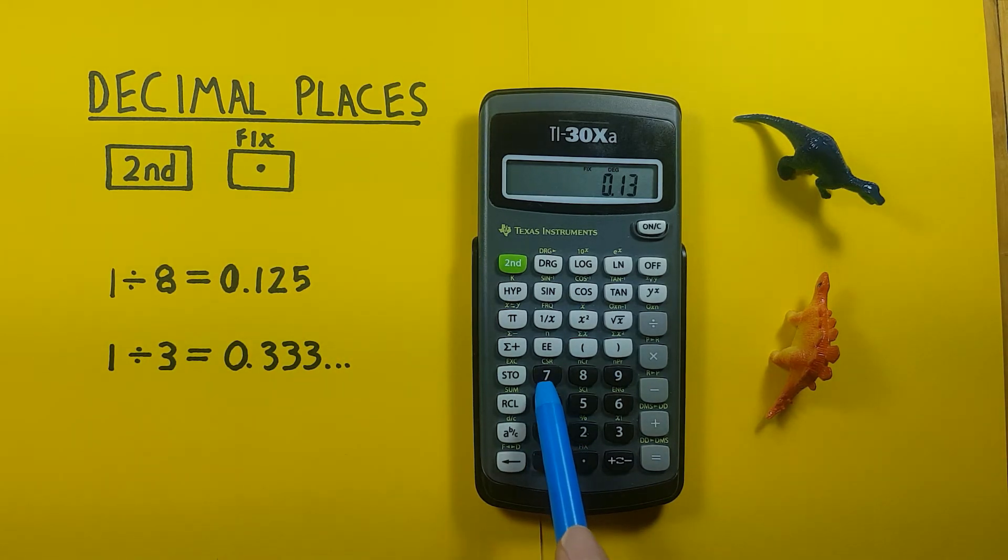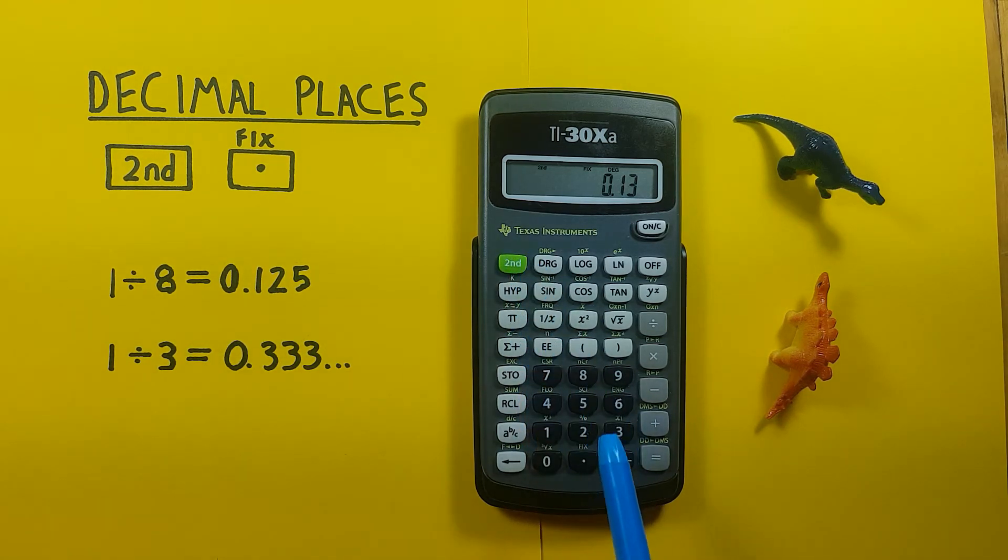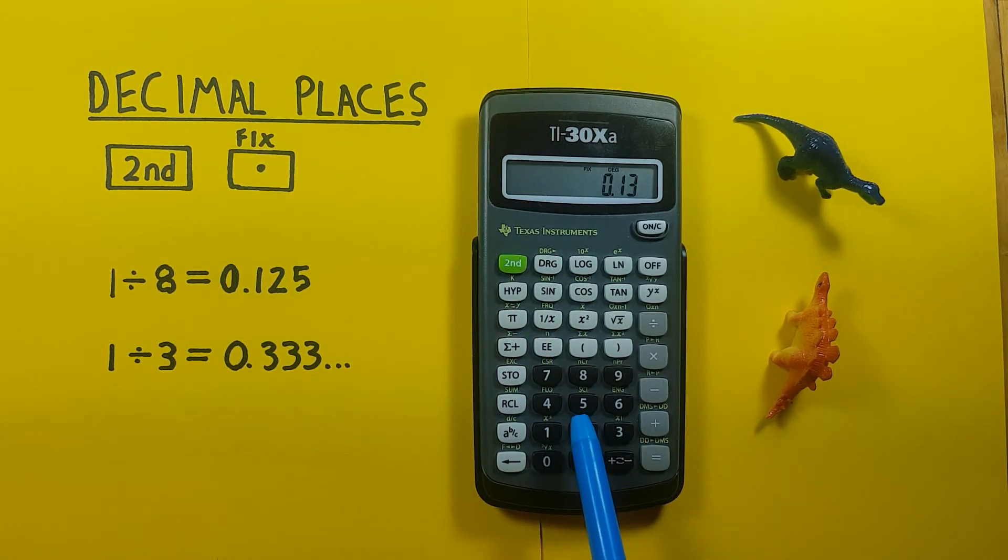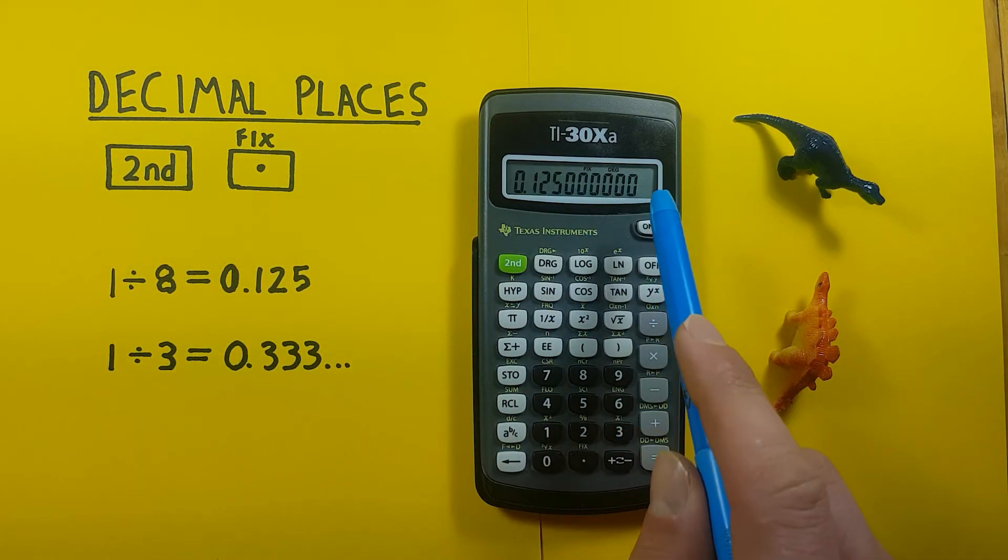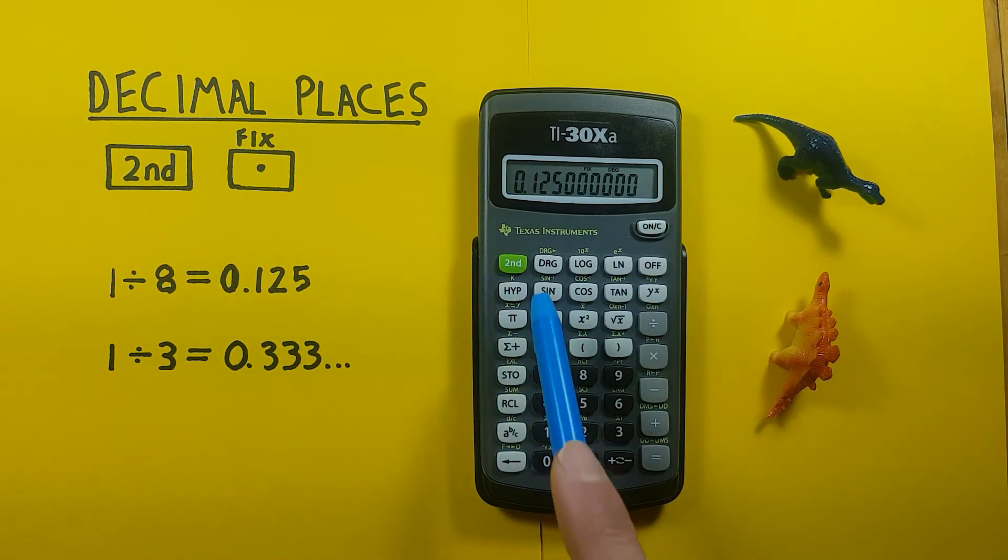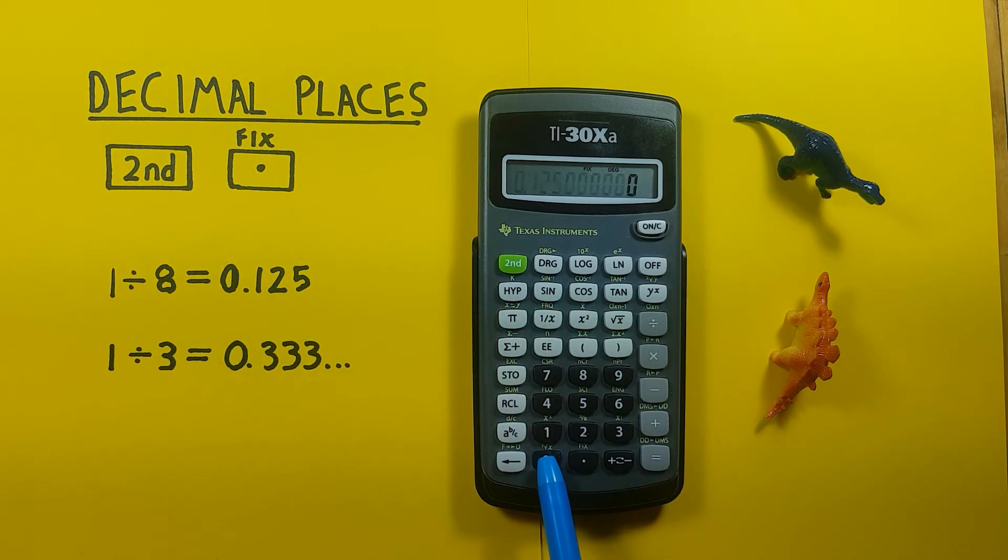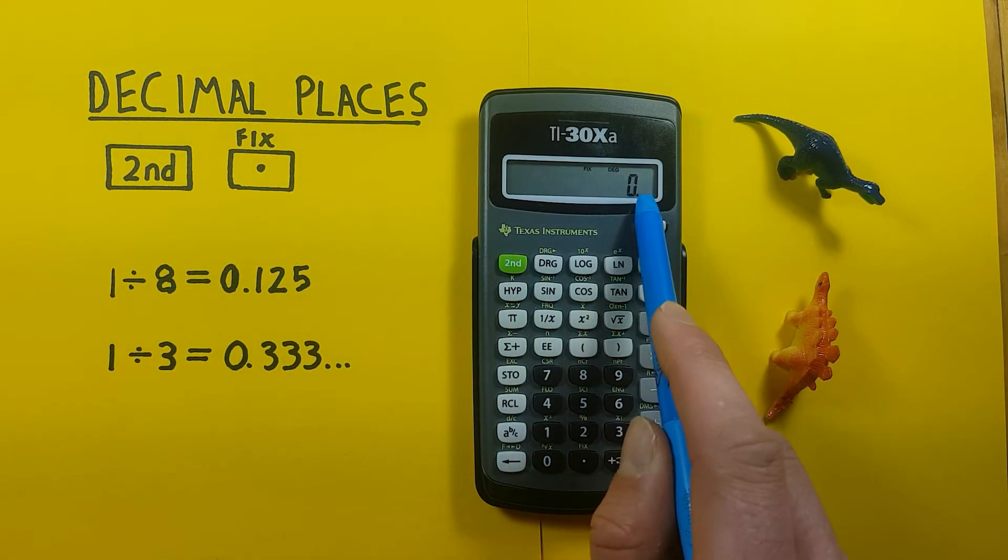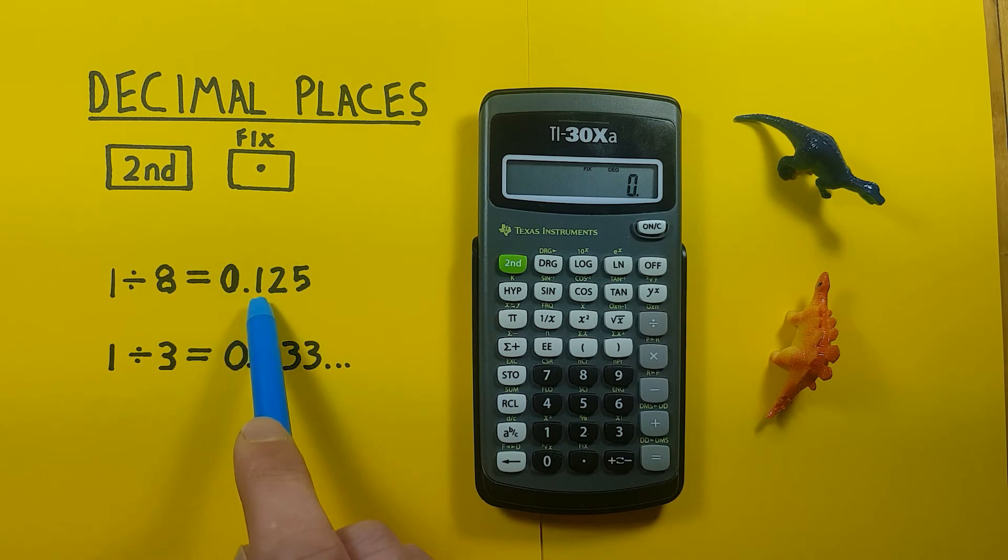We can choose between 0 and 9 decimal places by pressing 2nd, decimal, and then say 9 decimal places. Or all the way down to 0 decimal places, and you can see this is rounded to 0 because we are at 0.125 which would round down.